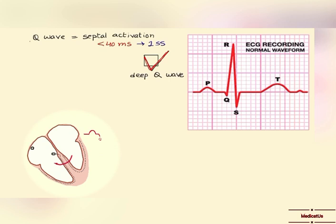When talking about a normal Q wave, it is a small q and not a capital one, and it is in the negative direction. It is negative because we measure the Q wave on leads V5 and V6, and as the vector for the Q wave is going away from these leads, it will appear negative.